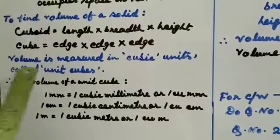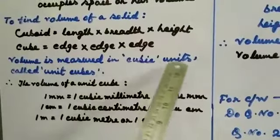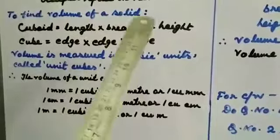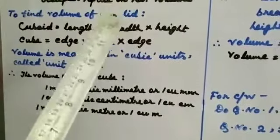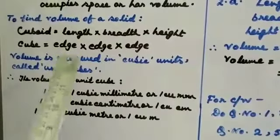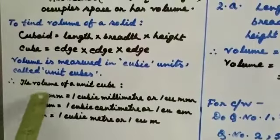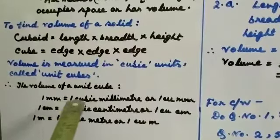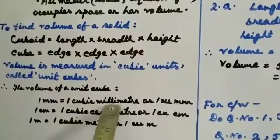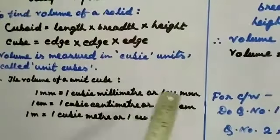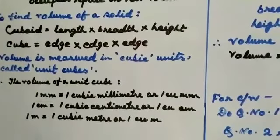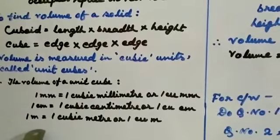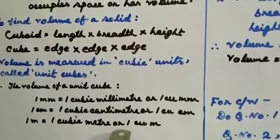Volume is measured in cubic units called unit cubes. When you multiply length, breadth, and height, you get the volume, which you write as cubic units. For example: 1 mm gives 1 cubic millimeter (1 cu mm); 1 cm gives 1 cubic centimeter (1 cu cm); and 1 meter gives 1 cubic meter (1 cu m).